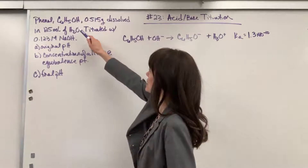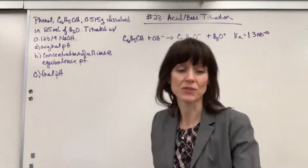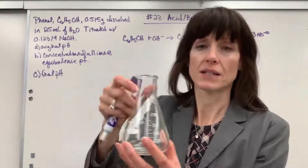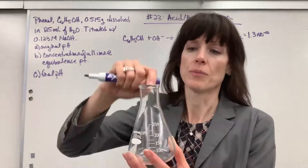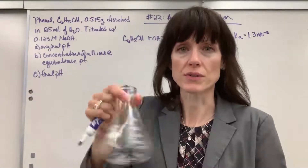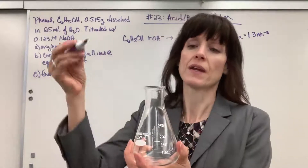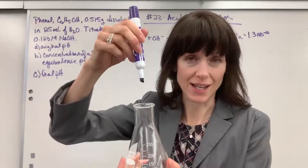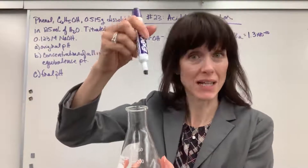We have phenol, C6H5OH, and we've got 0.515 grams dissolved in 125 mLs of water. Imagine that I measure out 0.515 grams of phenol, put it in my Erlenmeyer flask, bring it to volume at the 125 mLs and swirl until dissolved. There's the analyte. Then I'm going to have up here my burette delivering sodium hydroxide, a strong base. So I have a weak acid for my analyte and the strong base is going to be my titrant.